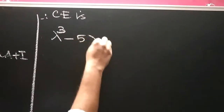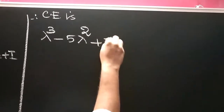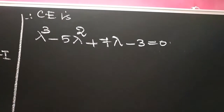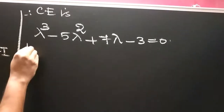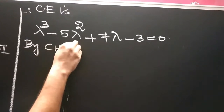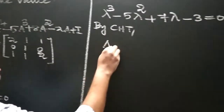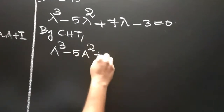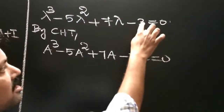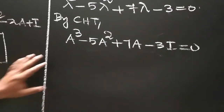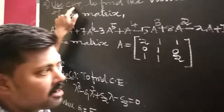So the characteristic equation is lambda cubed minus S1 lambda squared plus S2 lambda minus S3 equal to zero. By the Cayley-Hamilton theorem, every square matrix satisfies its own characteristic equation. So replace lambda by A: A cubed minus 5A squared plus 7A minus 3I equal to zero. Here I is the identity matrix, so we write 3I. There is no need to verify since the question says to use the Cayley-Hamilton theorem.